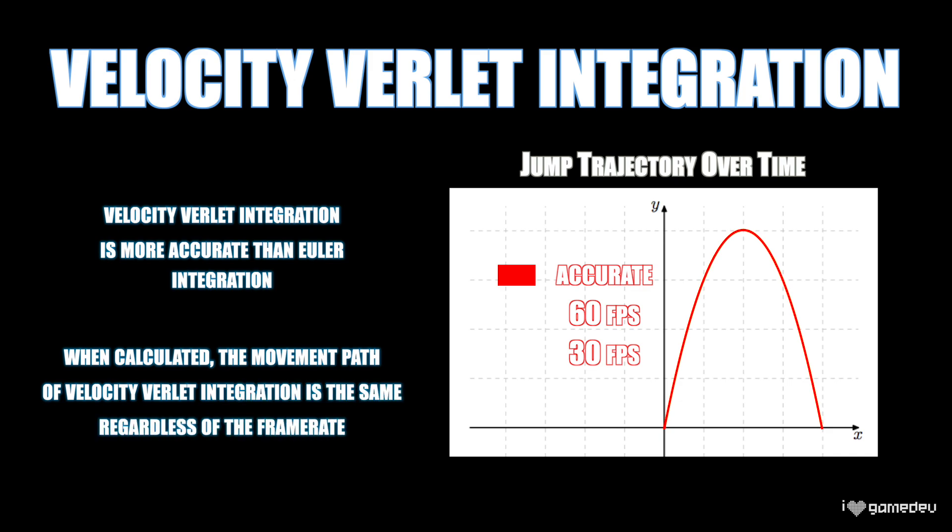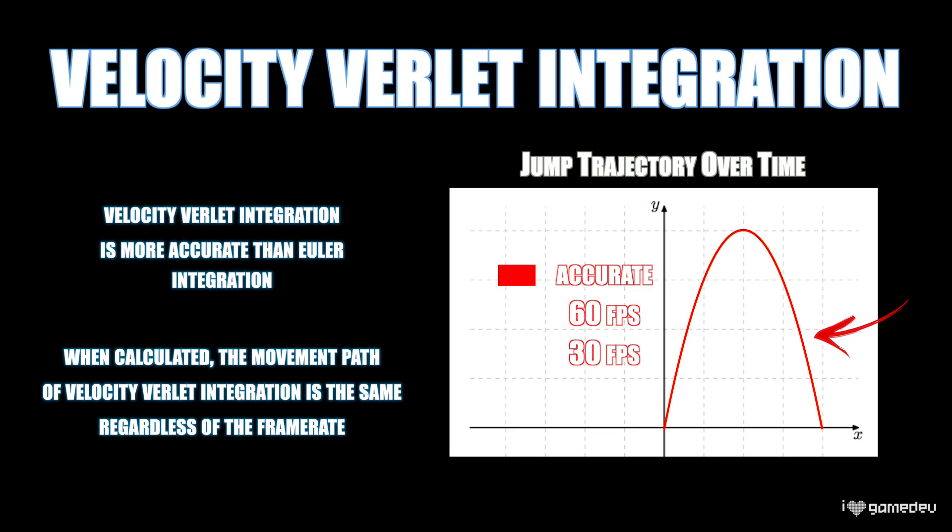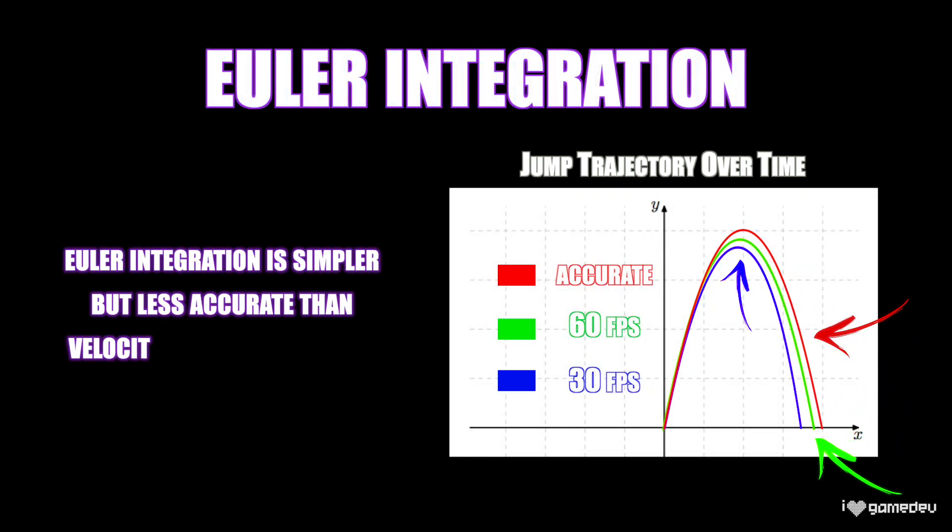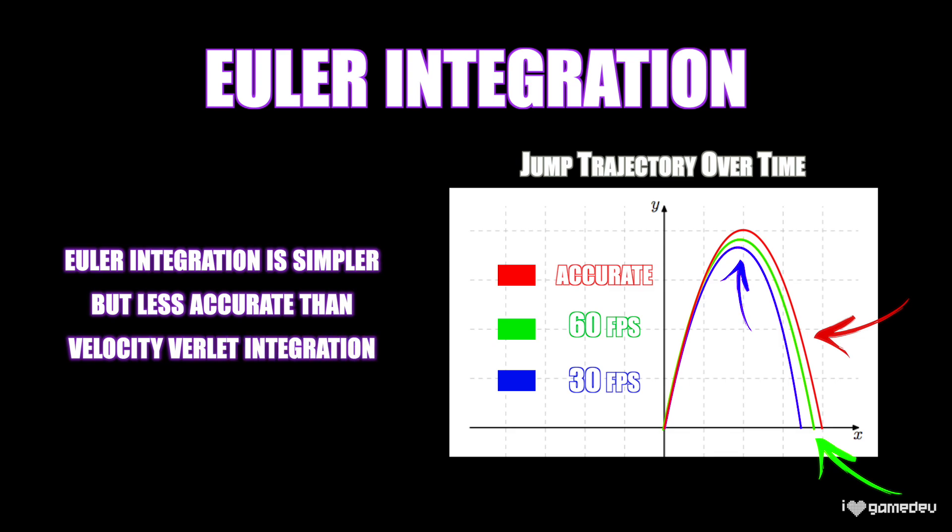Whether the game runs at 30 frames per second, 60 frames per second, 120 frames per second, the character will always reach the same exact height. But we cannot say the same for Euler integration. The difference in height is minor with Euler integration, but it is there.